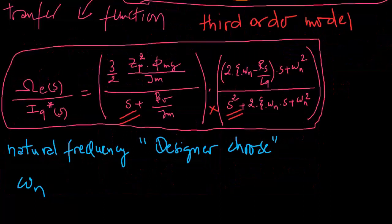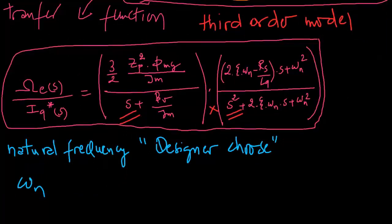One notable aspect is the parameter omega-n, representing the natural frequency for the inner loop Q-axis current control. We select this parameter during the design to achieve a first-order approximation by selecting a significantly large omega-n value and ignoring inner loop current control dynamics.